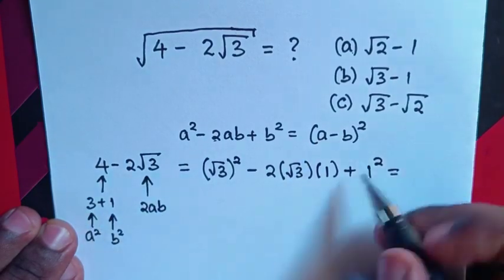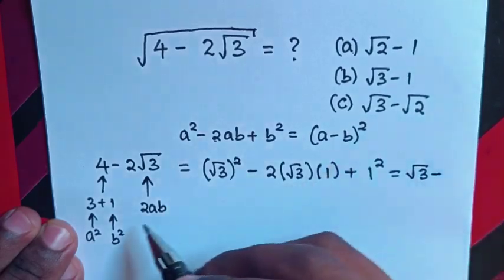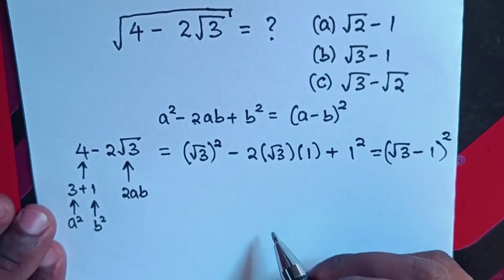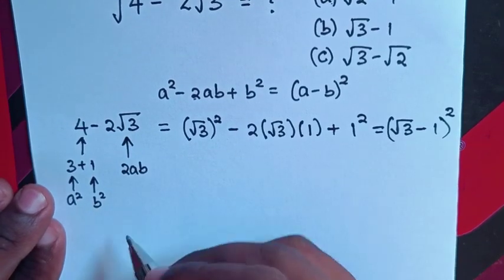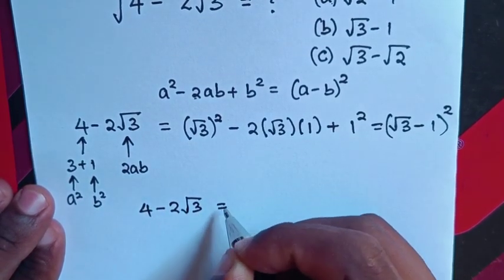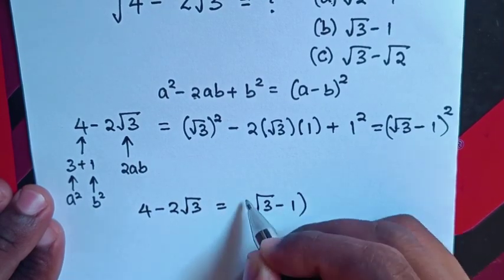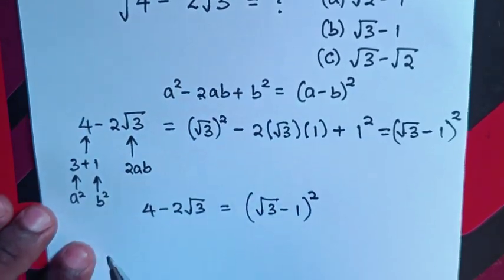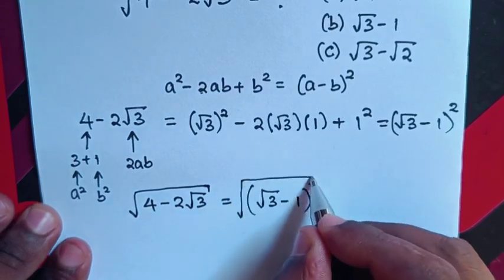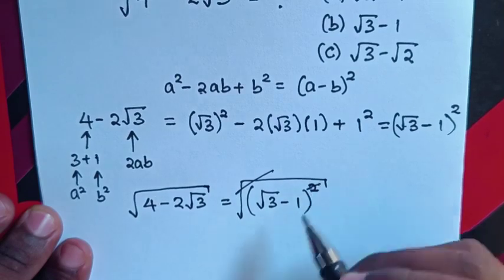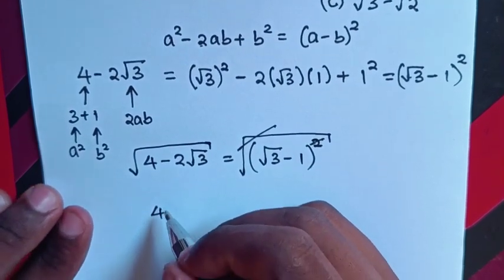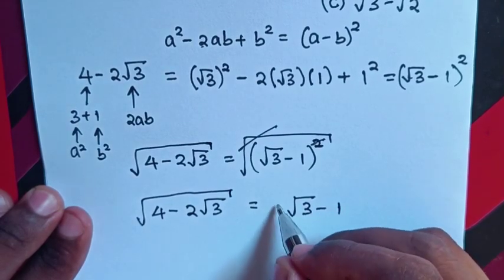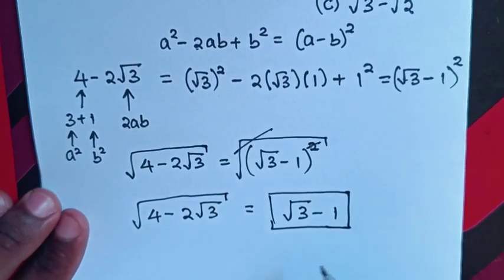So a here will be √3 and b will be 1, giving (√3 minus 1) squared. Then from this expression, 4 minus 2√3 will be equal to (√3 minus 1) squared. But remember, this expression was inside under the square root, so we apply the square root to both sides. The square root cancels with the square, so the square root of 4 minus 2√3 equals √3 minus 1. This is the final answer, which is B.